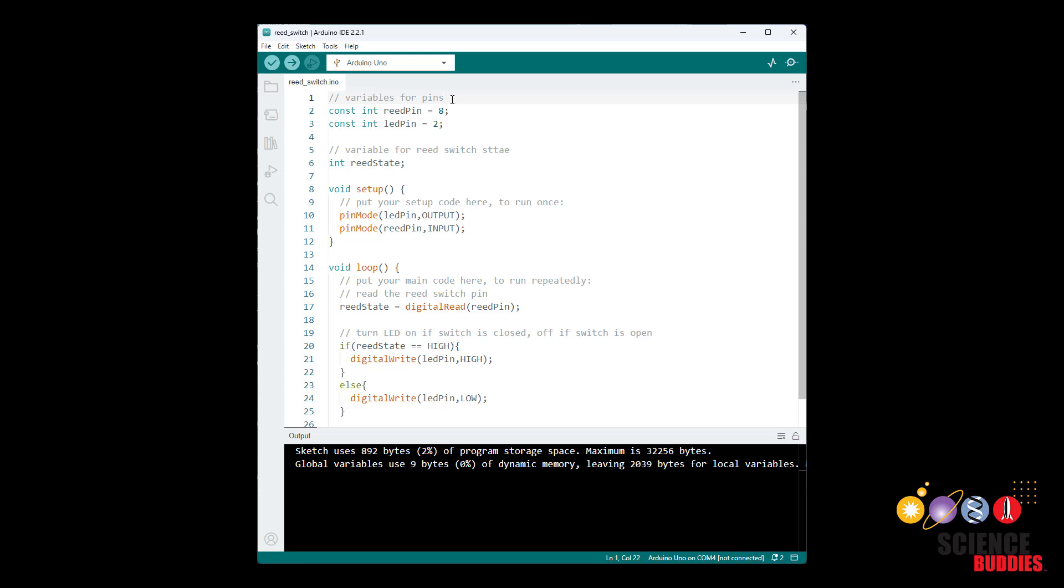If we take a look at the code, it is pretty much identical to the code you would use for controlling an LED with a regular push button. First, I declare two constant variables for my pins, one for the reed switch pin and one for the LED pin. I then declare a variable for the state of the reed switch input pin.